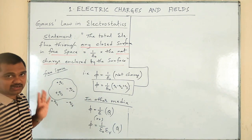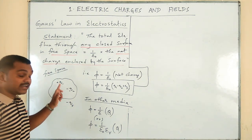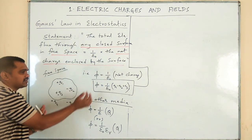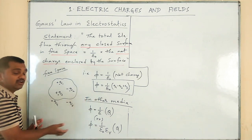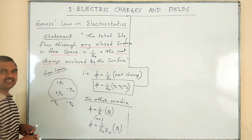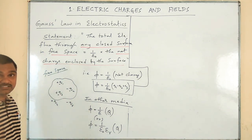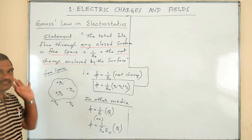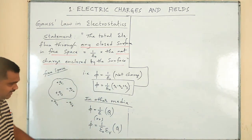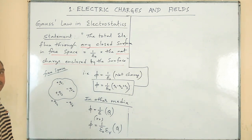Only two factors will affect the value of electrical flux: the nature of the medium we have selected, and the amount of net charge present inside that surface. Suppose what happens to the electrical flux when I increase the size of this Gaussian surface — any closed surface which is helpful to apply Gauss law is called a Gaussian surface. When the size of the Gaussian surface increases, the electrical flux remains the same because we are not changing the charges present inside the closed surface. Electrical flux depends only on the nature of the medium and the net charge inside.